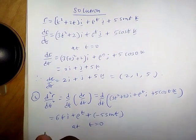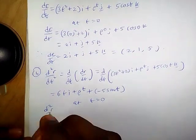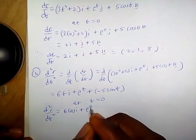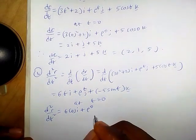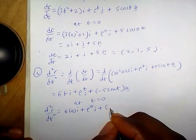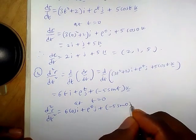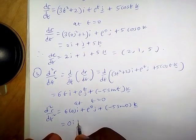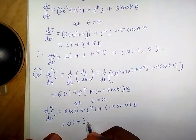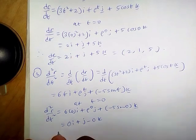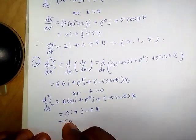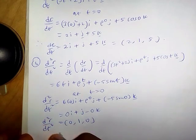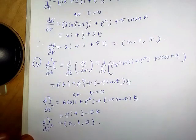At t equals 0, d²r/dt² equals 6·0 i plus e^0 j plus minus 5sin(0)k. Simplifying further we have 0i plus 1j minus 0k, which can be written as (0, 1, 0). Therefore d²r/dt² equals (0, 1, 0). Thanks for watching, subscribe, bye.